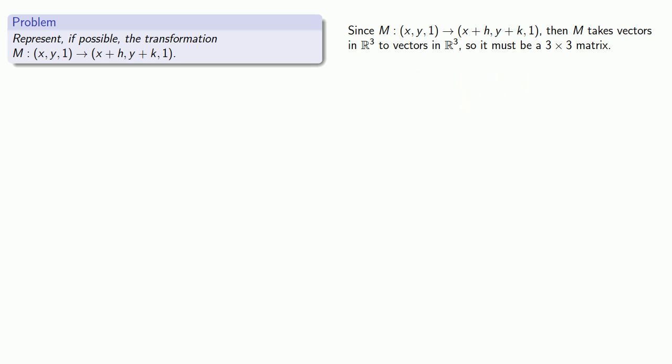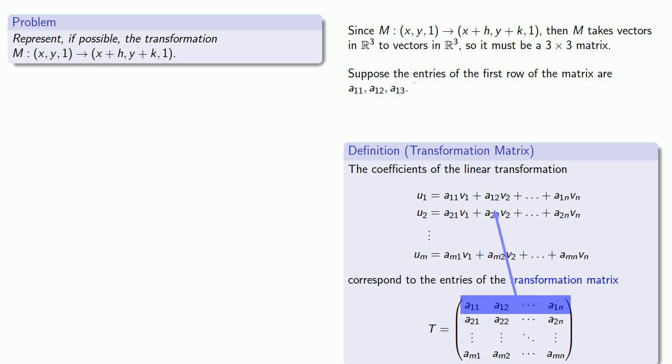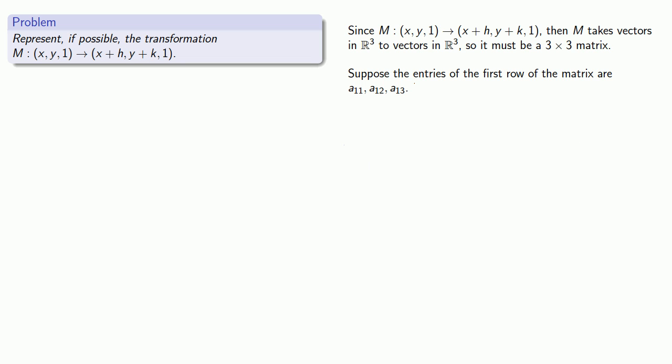Suppose the entries of the first row of this matrix are a11, a12, and a13. Remember that every row of a matrix gives us the coefficients of a formula that tells us how to find the new values from the old values. So these are the coefficients of the formulas that act on the components of (x, y, 1) to produce (x + h, y + k, 1).